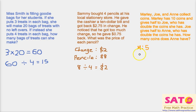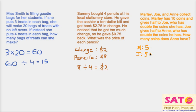Now how much does Joe have? Joe has the 5 coins Marley gave him, plus he already had double the coins Marley has. If Marley has 5, Joe has 10. So Joe already had 5, plus the 5 from Marley equals 10 — which is double Marley's amount.